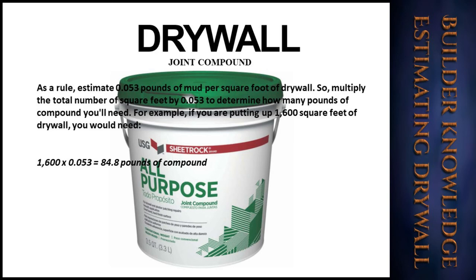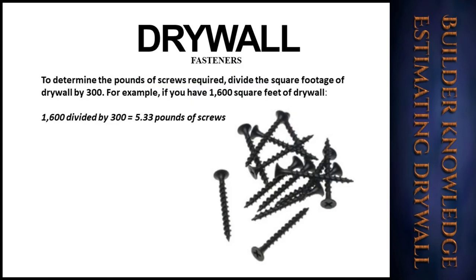As a rule, we estimate 0.053 pounds of mud per square foot of drywall. Multiply the total number of square feet by 0.053 to determine how many pounds of compound you'll need. For example, if you are putting up 1,600 square feet of drywall, you would need 1,600 times 0.053, which equals 84.8 pounds of compound.